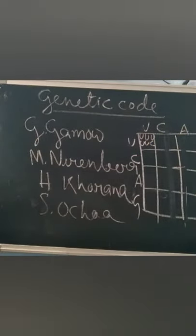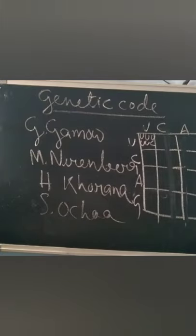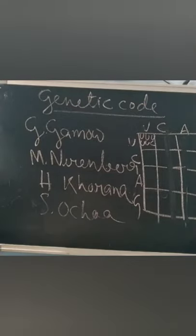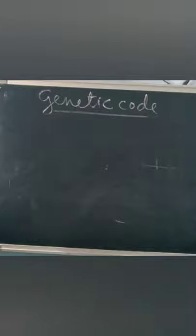From the table you can see: UUU codes for phenylalanine, UUA codes for leucine, UUG codes for leucine, and so on. The table lists amino acids such as leucine, phenylalanine, serine, tryptophan, cysteine, proline, histidine, glutamine, arginine, isoleucine, valine, alanine, aspartic acid, glutamic acid, glycine, lysine, and methionine. By reading the genetic code you can find which triplet codon codes for which amino acid.